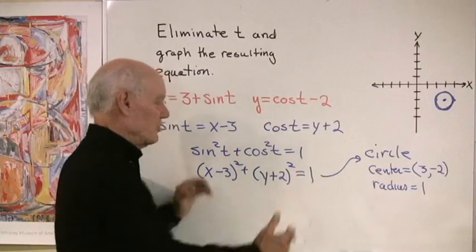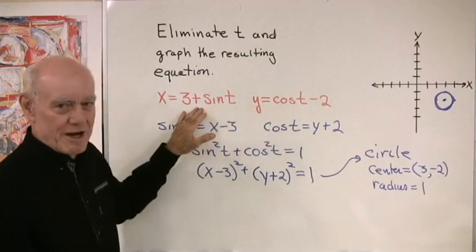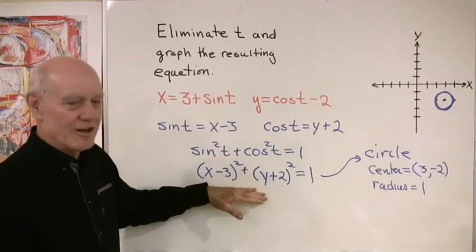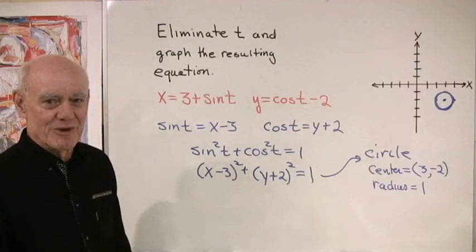Now this is something we're used to looking at, so now it becomes easy to graph. Up here I can't quite see what that graph is going to look like, but down here I know it's the equation of a circle with that center at 3 negative 2 and the radius of 1.